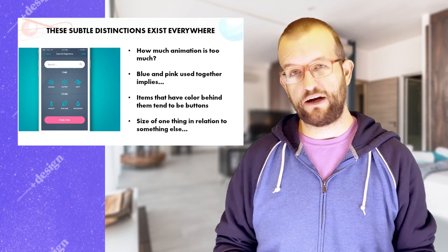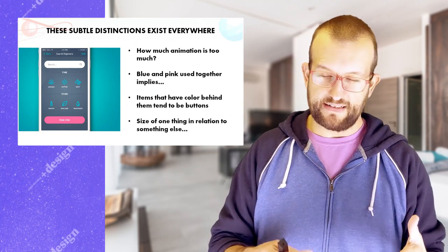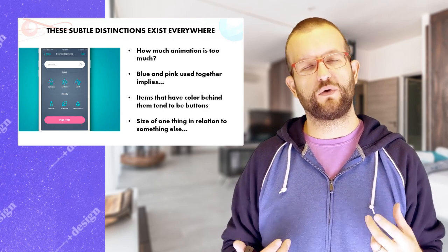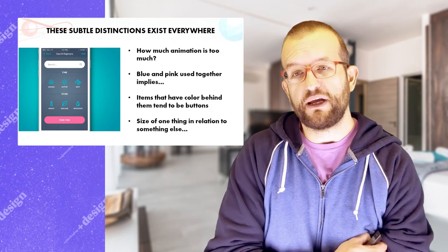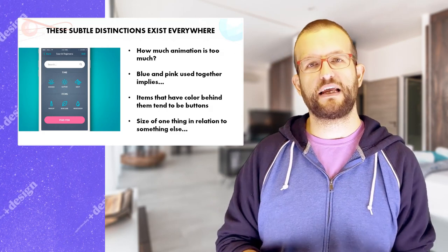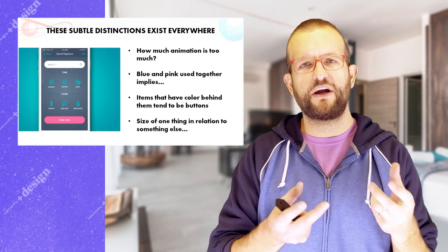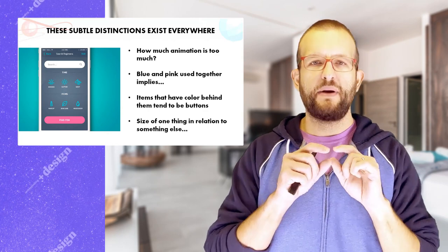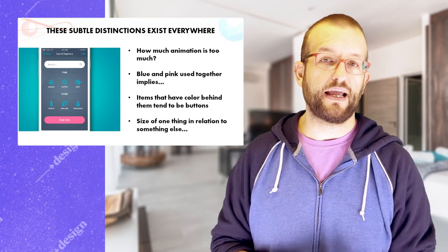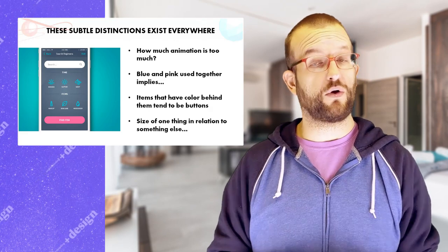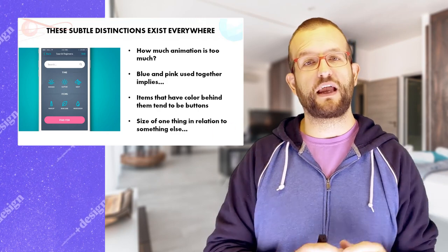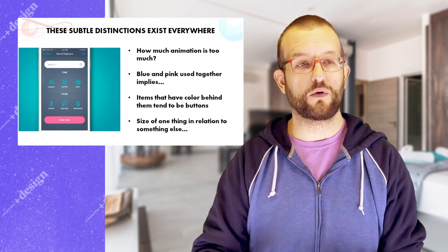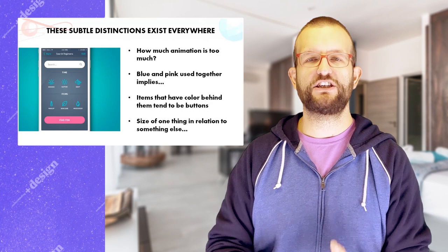Why does this matter as it relates to design? There are weird arbitrary definitions our society has constructed that no one's really articulated. How much animation is too much animation? What are you implying if you put blue and pink together — suddenly that conjures ideas of little boys and little girls. If an item has a field of color behind it that's completely filled in — is it a button? Is it selectable? Or if one item is 200% the size of another, naturally we believe the larger one is more important. All of these little cues play into how you digest information in a design.